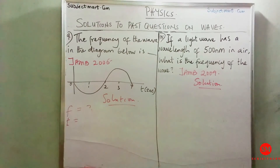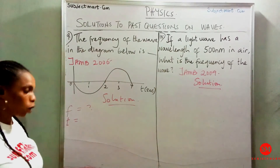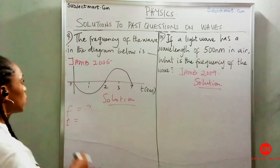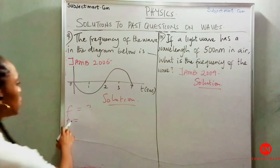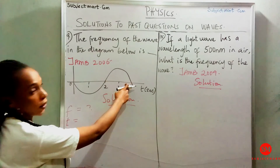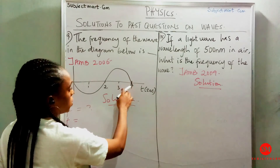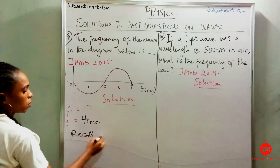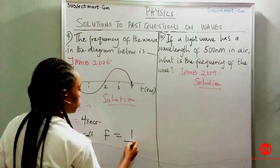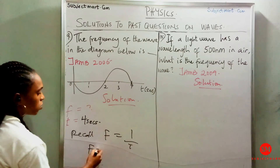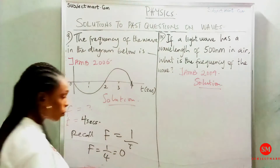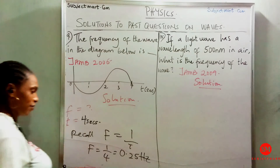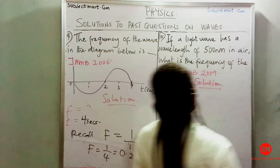Question 9 says the frequency of the wave in the diagram below is unknown. From the diagram, looking at where the wave cycle completes, that is 4 seconds — the time period is 4. Recalling that frequency equals 1 over T, frequency equals 1 over 4, which gives us 0.25 Hz. It's as simple as that.